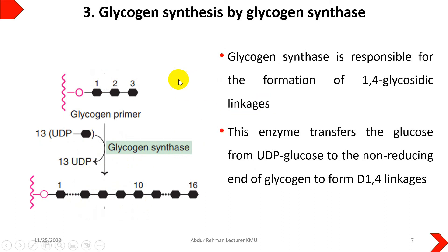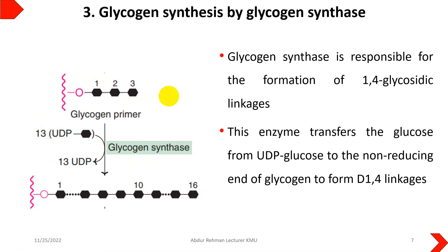In the third step, glycogen synthesis takes place by glycogen synthase. Once the hydroxyl group of glycogenin provides the initial attachment point, glycogen synthase adds more UDP-glucose units to the non-reducing end of the glycogen primer. All these bonds formed in this linear structure are alpha 1-4 glycosidic bonds, giving a linear chain structure.